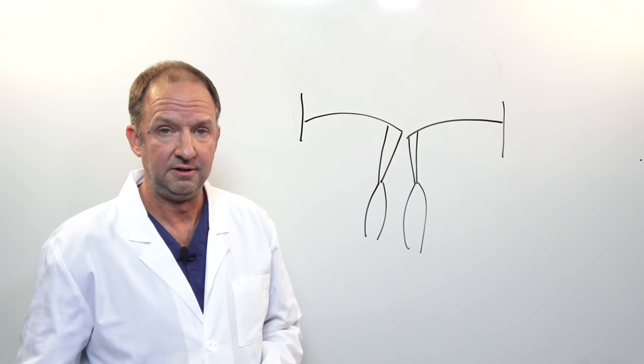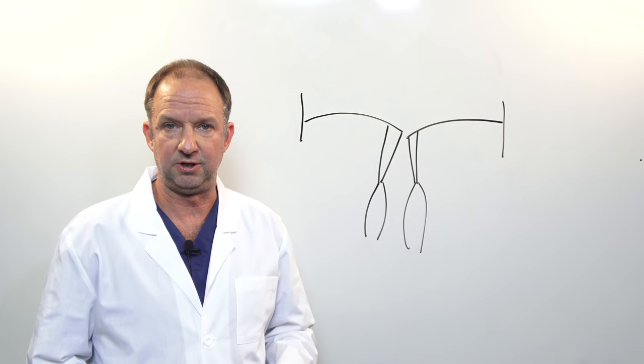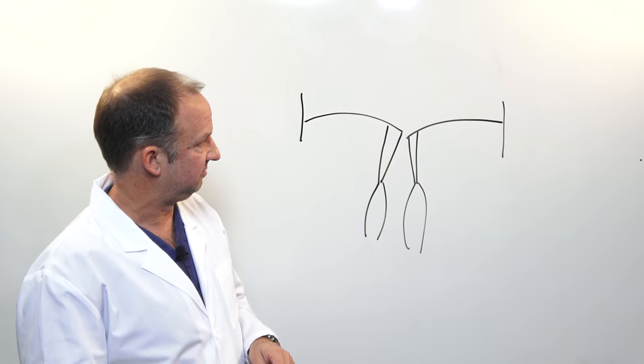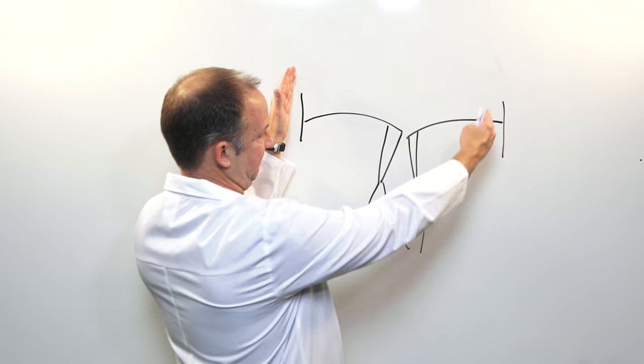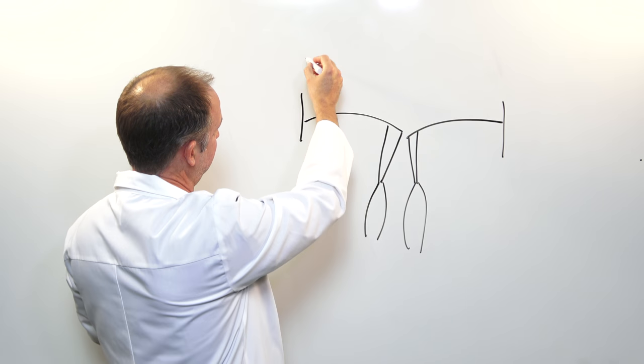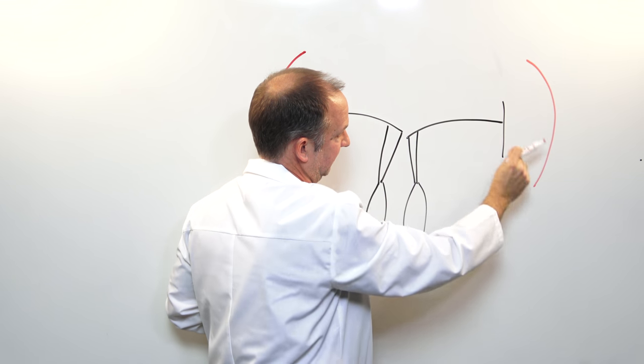So one condition that's common for causing a leaky mitral valve is what we call functional mitral regurgitation. What happens in those cases is that rather than having nice straight walls where the mitral valve attaches to, these walls stretch out.